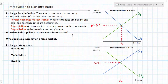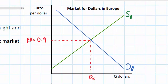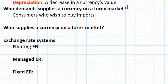Before illustrating appreciation and depreciation on our graphs, let's talk about who demands and who supplies a currency on the forex market. Looking at the market for dollars in Europe: any European who wishes to buy an American product must acquire US dollars to do so. Even if you don't carry dollars into a store in Europe, that transaction ultimately requires an exchange of euros for dollars. Therefore, the more European consumers wish to buy American products, the greater the demand for dollars.